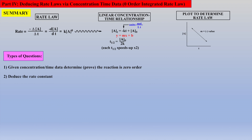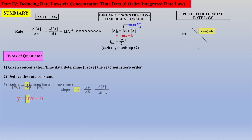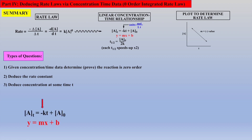Another important skill is to deduce the rate constant, which is the negative of the slope for a zero-order reaction. The rate constant is often needed for subsequent types of questions. Another skill is to deduce the concentration of a reactant at some time t. Using the linearized integrated zero-order equation, we realize we need the rate constant, the time, and the initial concentration to solve for the concentration of A at some time t. When all of these values are known, the concentration can be deduced at any time t with a little algebra.